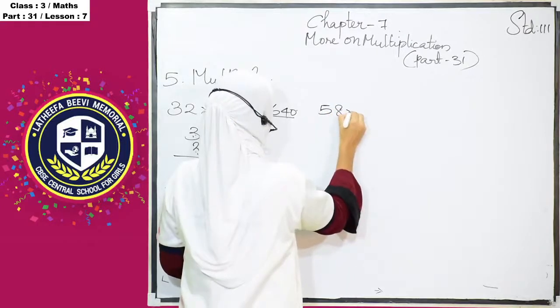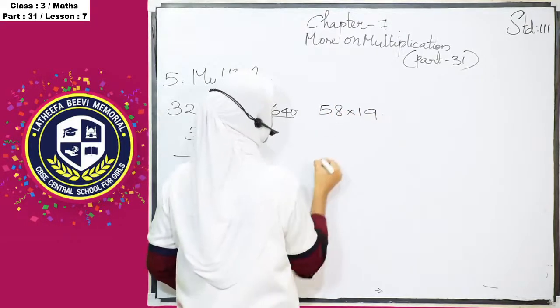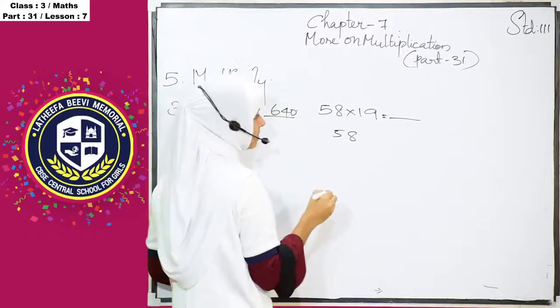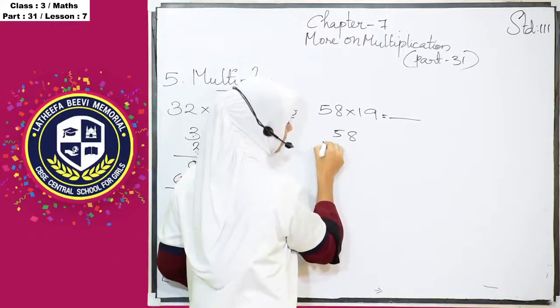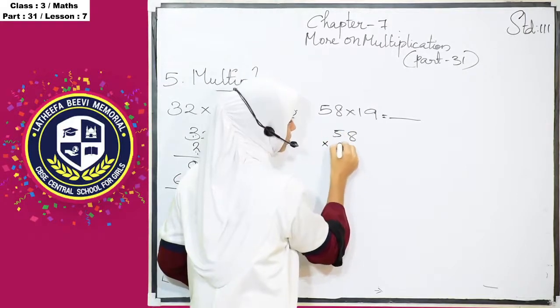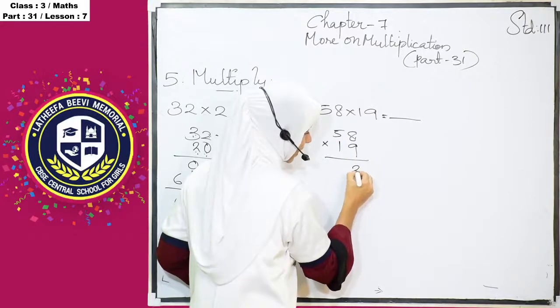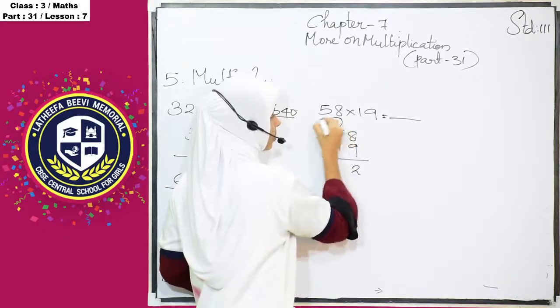58 into 19, 58 into 19 is equal to dash. For doing all these problems, you must by heart the tables. 58 into 19.